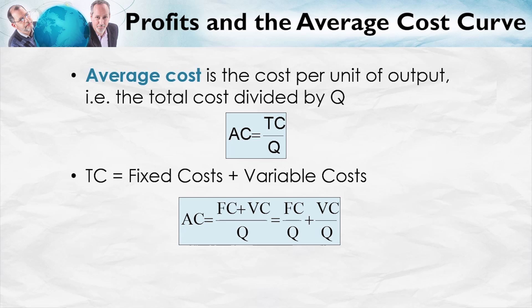That's useful because we can get some intuition for the shape of a typical average cost curve. Notice that the fixed costs don't change with Q — that's why they're fixed. So when Q is small, suppose fixed cost is 100 and Q is small, then this number is going to be big, like 100 divided by 1. As Q gets larger, fixed cost divided by Q is going to get smaller. So when Q is 10, 100 divided by 10 becomes 10.